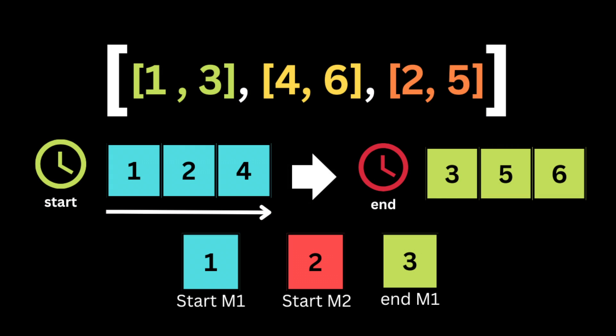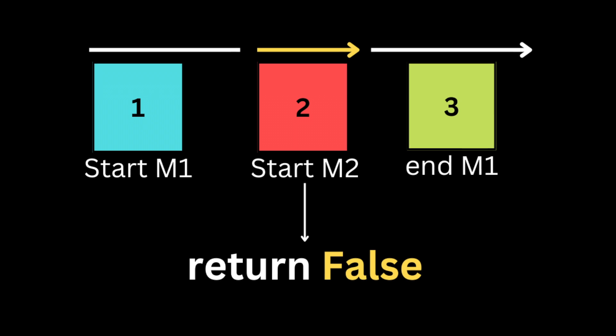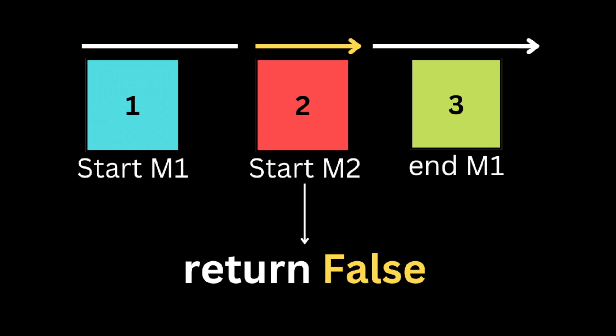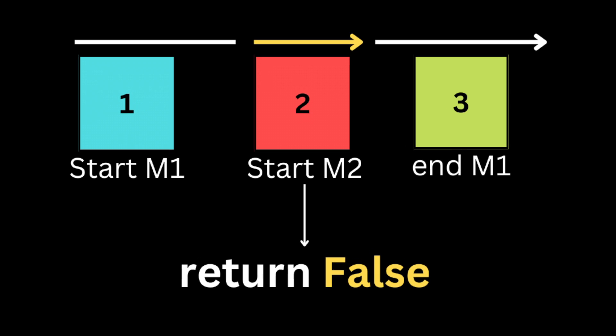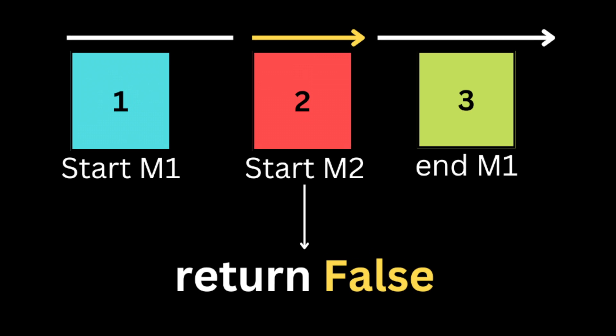At each iteration we check if the start of the next meeting conflicts with any previous meeting. For example, if the end of the first meeting is at 3pm and the second meeting starts at 2pm, we cannot attend both meetings, so we return false.